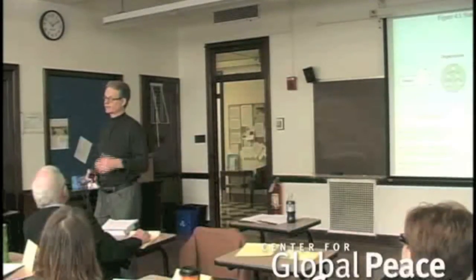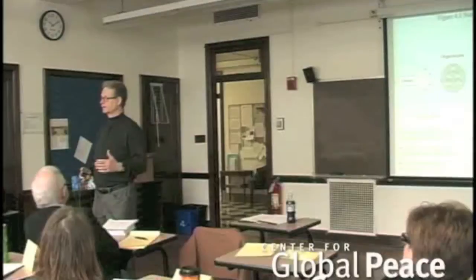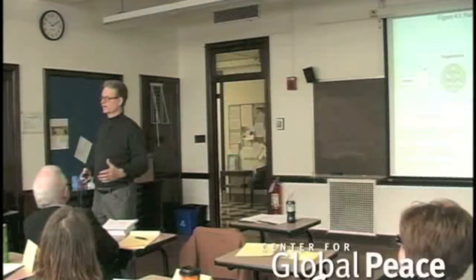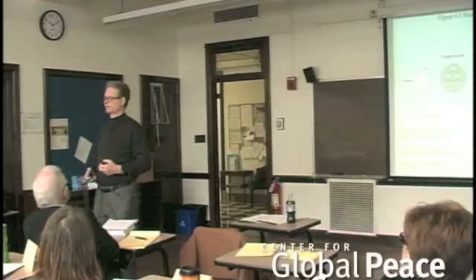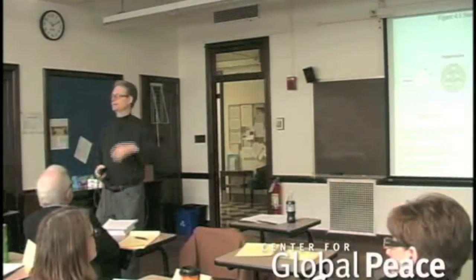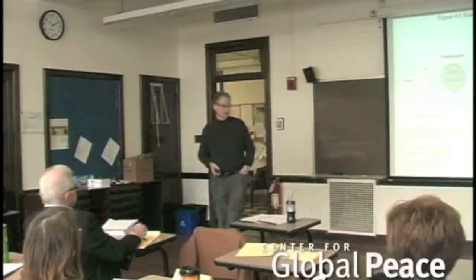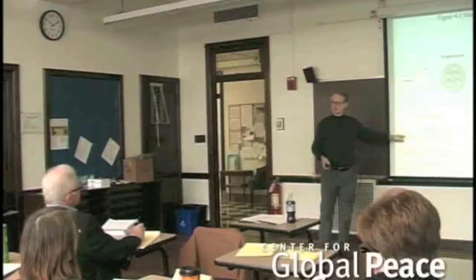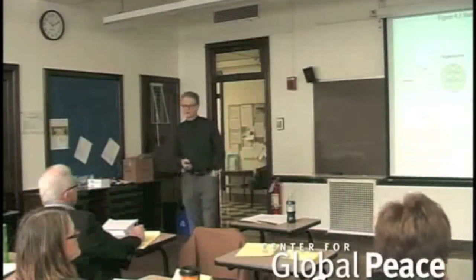As we get into sustainability, it's not a one-dimensional thing. Some organizations have a sustainability department, and that may be good to facilitate things, but you can't have that one organization owning the whole sustainability program. It has to be owned by each function and each division. If you want to show that ownership, the cross-functional team is critical — with leadership to help keep it focused, drive meetings, bring things to the agenda, and so forth. That, coupled with a champion and visible top management support, is key.